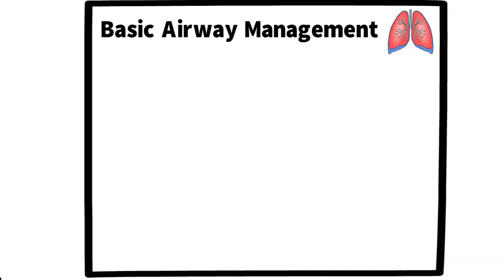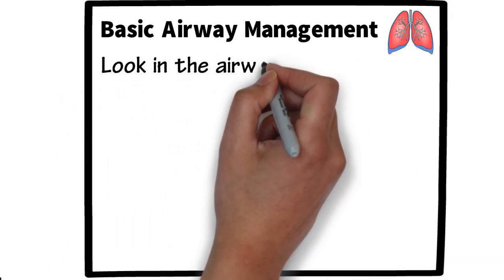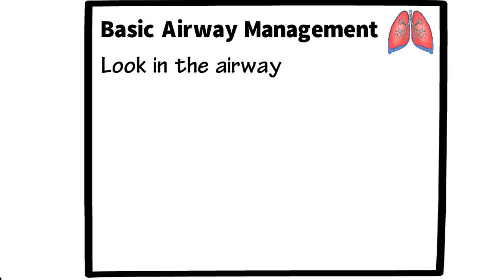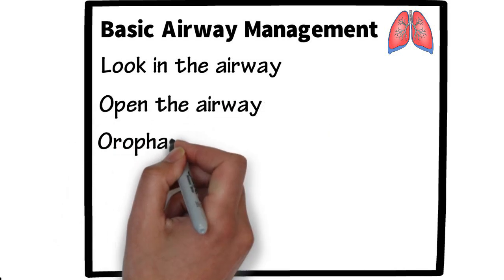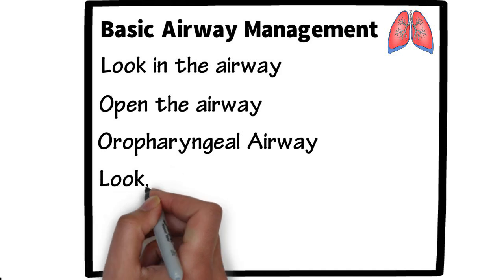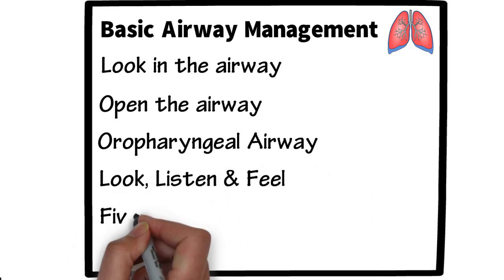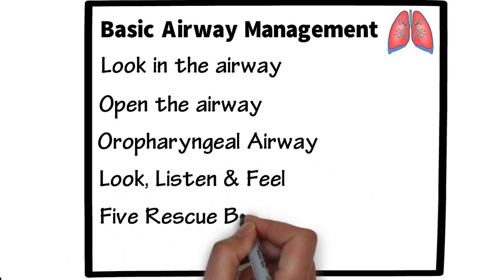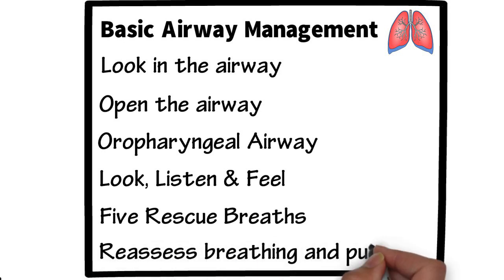For basic airway management, the first thing we need to do is look in the airway — are there any foreign body obstructions? We'll then open the airway, size up and place an OPA, and look, listen, and feel for breathing for up to 10 seconds. We're then going to provide five rescue breaths, and then reassess breathing and check for a pulse.